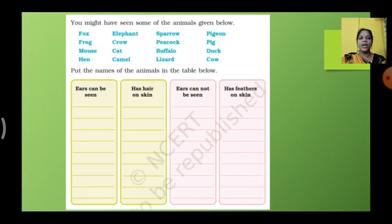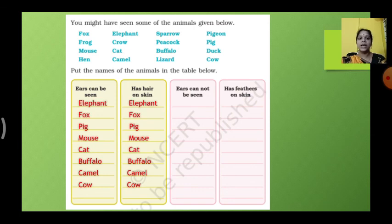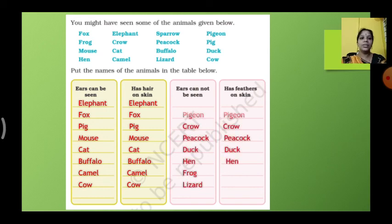So they have different types of patterns. You might have seen some of the animals given below. Like some of the animals they have given, you have to write the table. First one is because ears can be seen. Next, has hair on the skin, and ears cannot be seen, has feather on skin. Okay children, first one, the both the tables have elephant, fox, pig, mouse, cat, buffalo, camel, and cow. The next two tables have sparrow, pigeon, crow, peacock, duck, and hen. They have both. They don't have ears and they have ears, but we can't see. And they are covered with feathers on the skin.